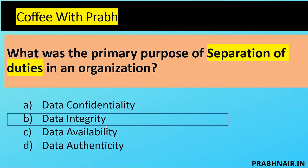Always remember: SOD provides assurance that there is no transaction fraud, because one person will not have control of an end-to-end transaction. However, there is a possibility all three people could work together, which is why we introduce further controls called mandatory vacation and job rotation. Data authenticity doesn't apply here, and availability has no connection with SOD. So the answer is B.